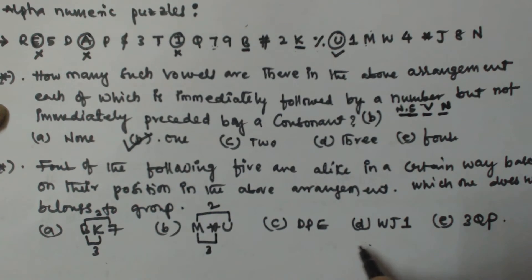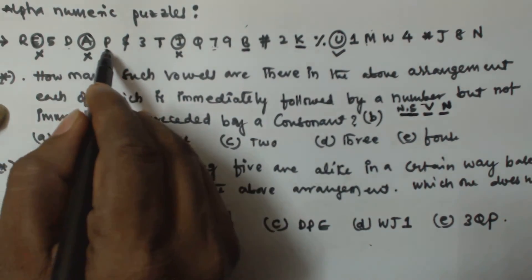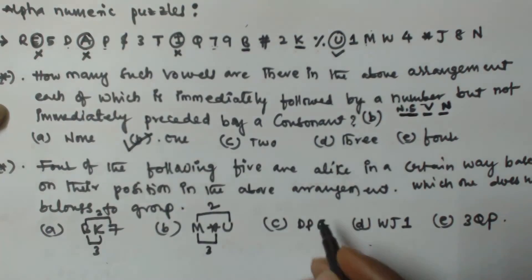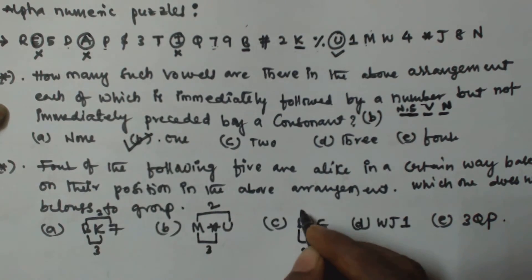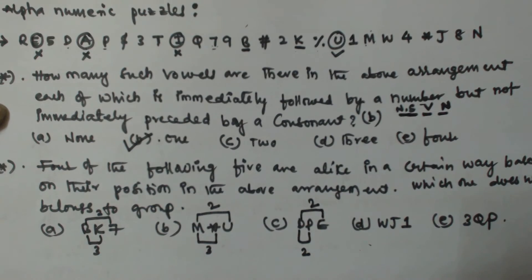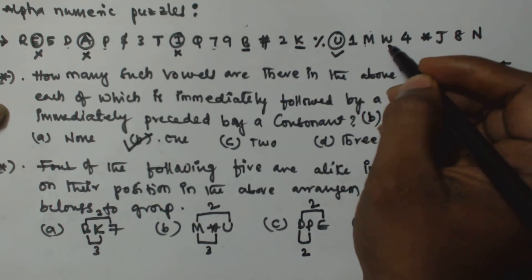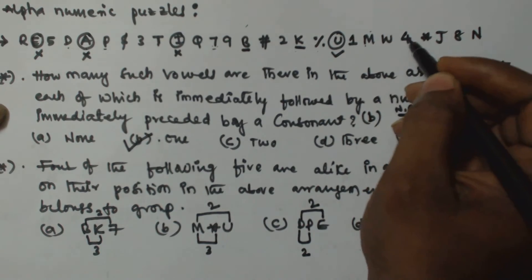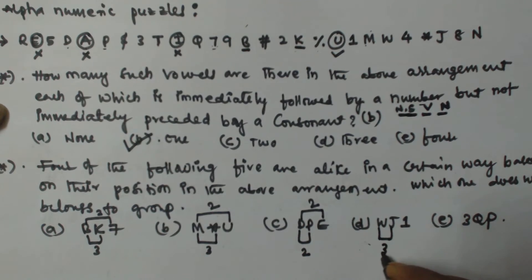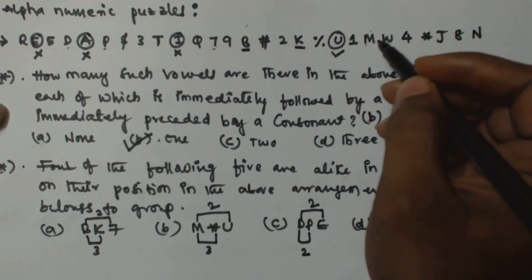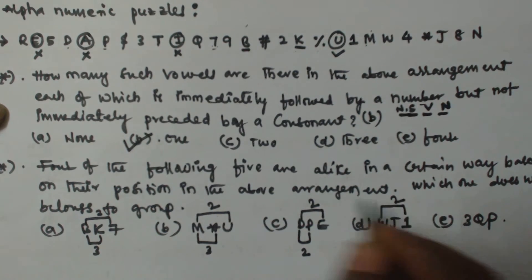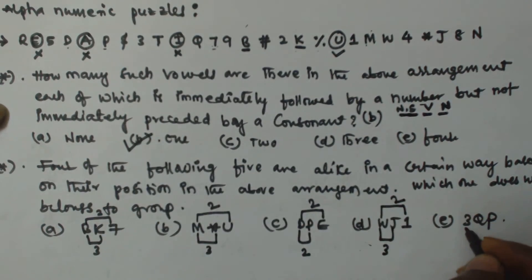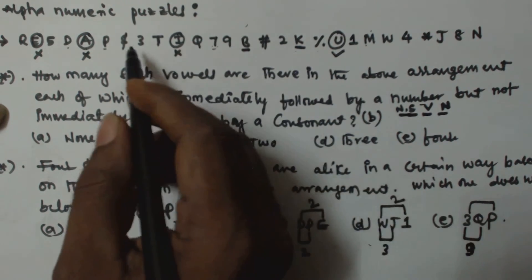Option C, dp: from 'd' to 'p' it takes two steps to the right, and from 'd' to 'e' it takes two steps to the left — so it's two and two. Option D, wj1: 'w' to 'j' is three steps to the right, and 'w' to '1' is two steps to the left — three and two. Option E, 3qp: from '3' to 'q' is three steps to the right, and from '3' to 'p' is two steps to the left — three and two.